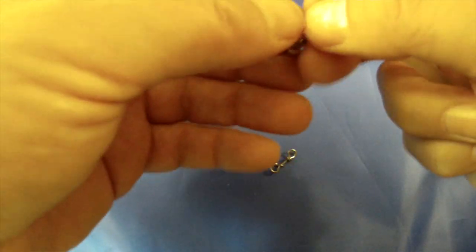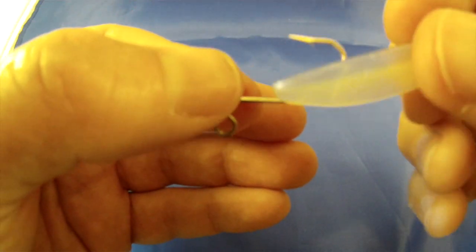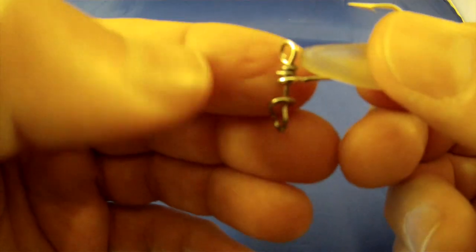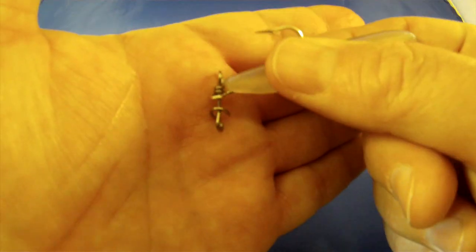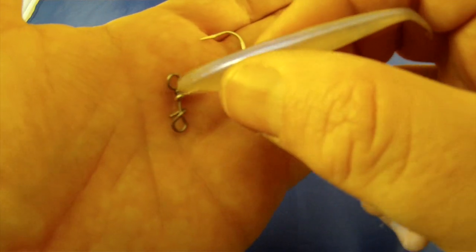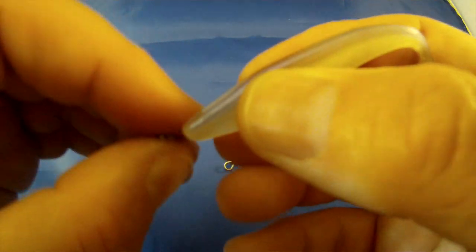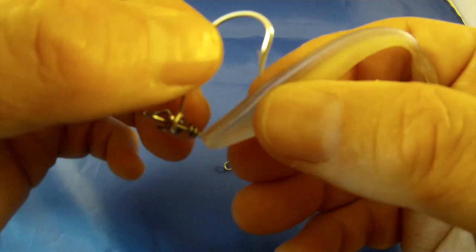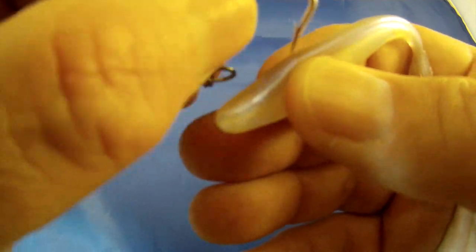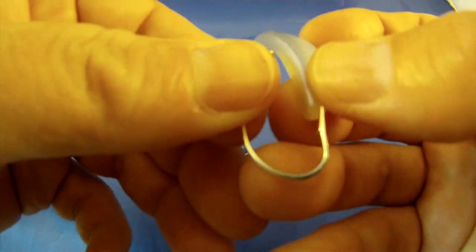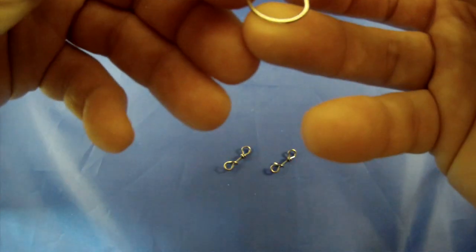So just like I'd rig a regular fluke on a jig head, I'm going to measure it. So that's where the hook needs to come out. I'm just going to make a cheat sheet and measure it. I'm going to mark it. So I made my mark. I'm just going to tear the plastic a little bit right there, so now you know where the hook needs to come out.